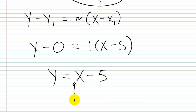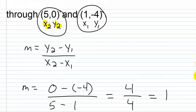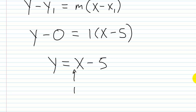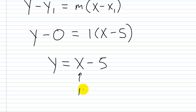The slope here is 1, since x has an implied coefficient of 1, and the y-intercept is 0 comma negative 5. Checking the points: plugging in x = 5 gives 5 minus 5 = 0, which matches. Plugging in x = 1 gives 1 minus 5 = negative 4, which also matches. This one checks out.